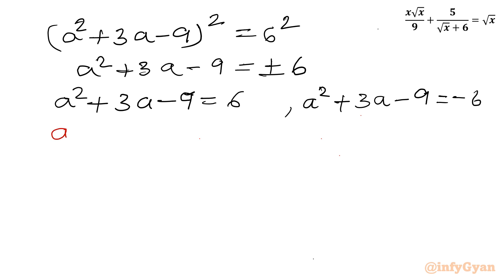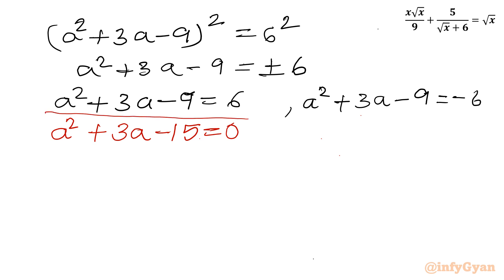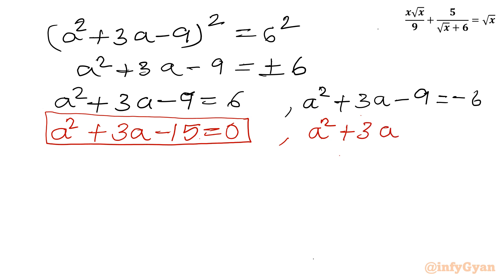So we will write two quadratic equations. First: a² plus 3a minus 15 equal to 0. Second: a² plus 3a minus 3 equal to 0.